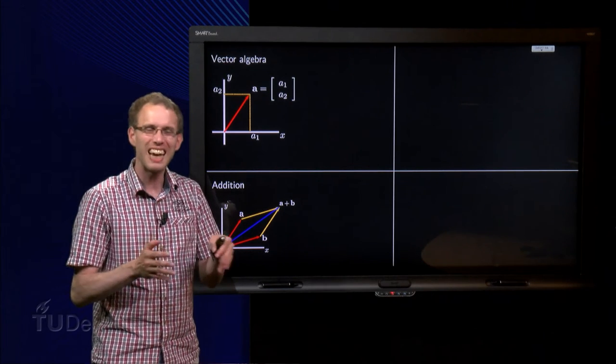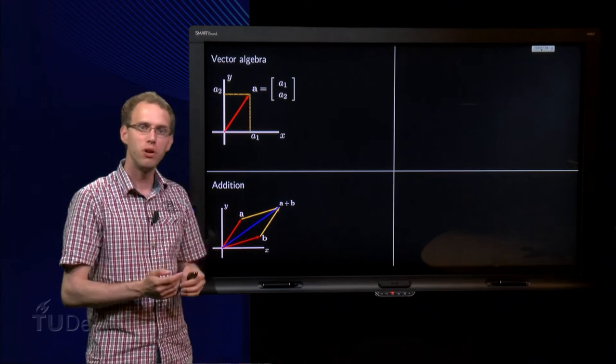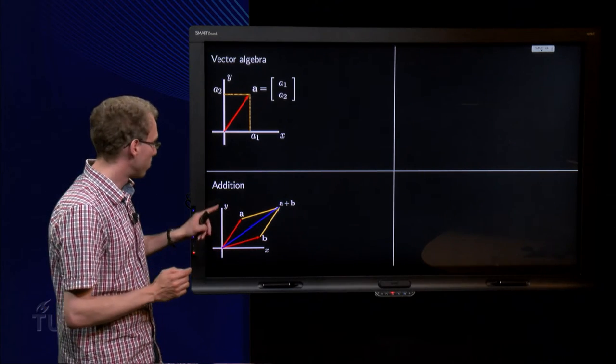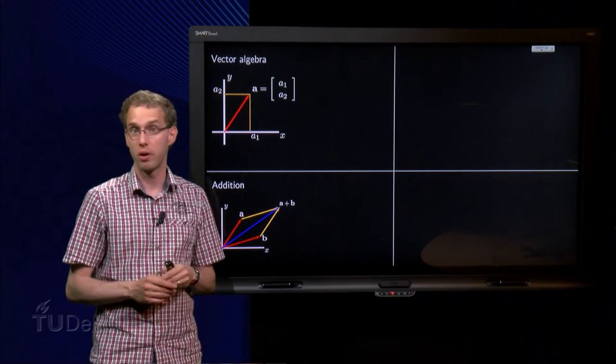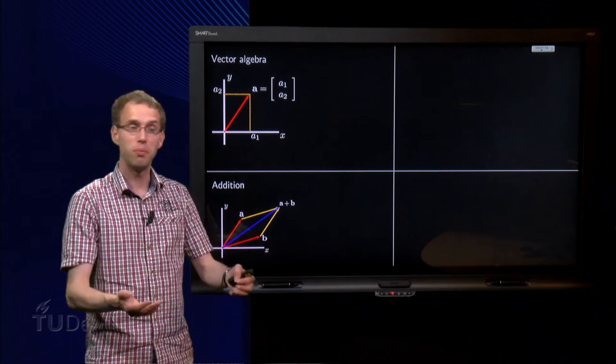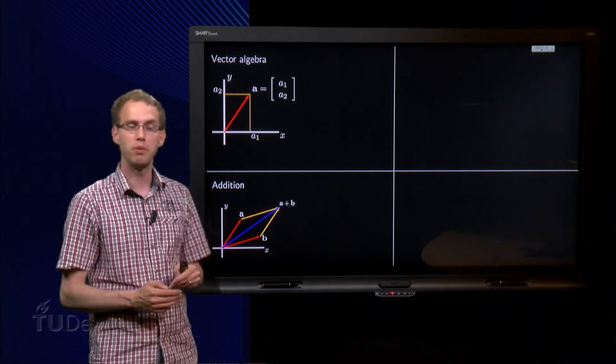And why exactly in this way? Well you can view these vectors as displacements. Suppose first you walk along A, and then you walk along B. Where do we end up? Well exactly like this, in A plus B. So there is physics behind the way you add those vectors.